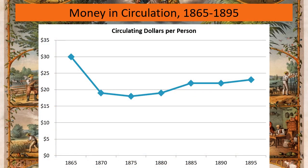I went ahead and calculated the money supply at this time period per person. When I say there's $30 per person in 1865, it doesn't mean everyone has 30 bucks — it just means there's 30 bucks floating around in the economy for every human being in the United States at this time.